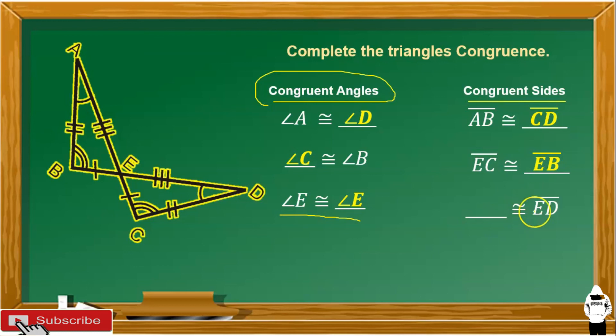Segment EB is congruent to segment AE. Now you know how to identify the congruent angles and congruent sides based from this figure.